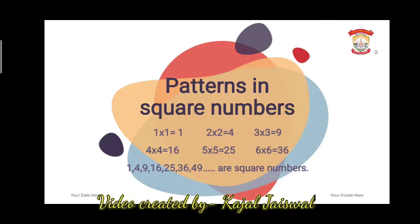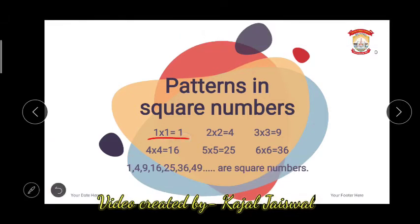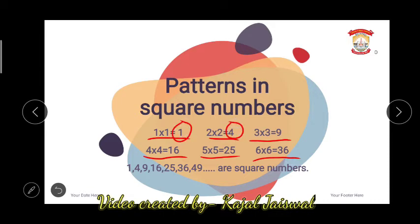First of all, square numbers. Square numbers are whenever a number is multiplied by itself. Suppose 1 into 1 — the number is being multiplied by itself, so 1 into 1 means 1. Again 2 into 2 is 4, 3 into 3 is 9, 4 into 4 is 16, 5 into 5 is 25, 6 into 6 is 36. These numbers are known as the square numbers because they are obtained when two numbers are multiplied together and both the numbers are same.